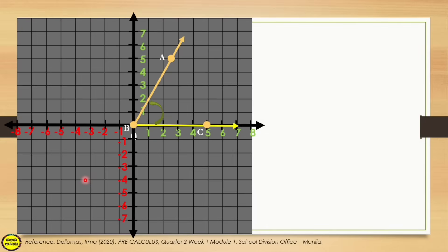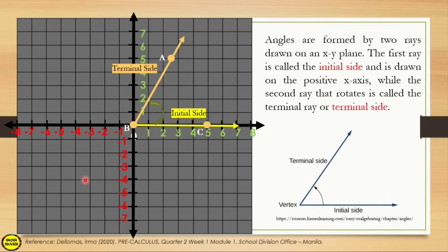In trigonometry, an angle is taught as the amount of rotation generated when a ray is rotated about its endpoint. Hence the necessity to label the sides of an angle. The initial position of the ray is called the initial side, and the position of the ray at the end of its rotation is called the terminal side. The arrowhead always points to the terminal side, and the endpoint of the ray is called the vertex of the angle.